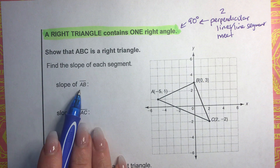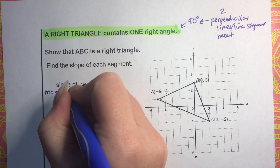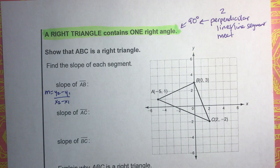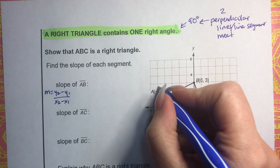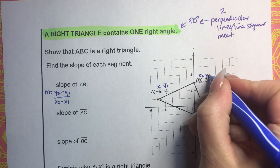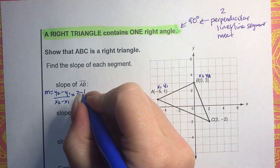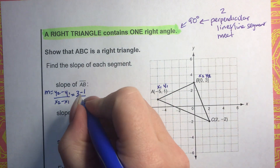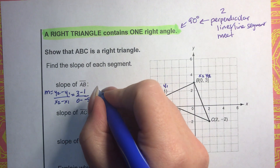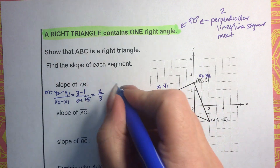Let's start with the slope of AB using the slope formula: M equals Y2 minus Y1 all over X2 minus X1. Identifying the variables: X1, Y1 for point A and X2, Y2 for point B, and plugging in. Y2 minus Y1 is 3 minus 1 equals 2, and X2 minus X1 is 0 minus negative 5 equals positive 5. So the slope of AB is 2 fifths.